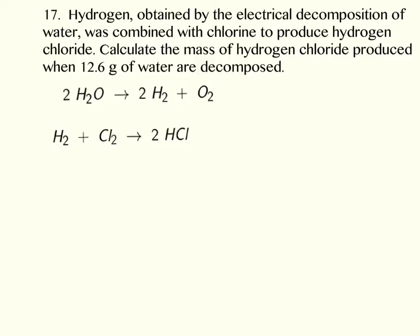Hydrogen, obtained by the electrical decomposition of water, was combined with chlorine to produce hydrogen chloride. Calculate the mass of hydrogen chloride produced when 12.6 grams of water are decomposed.